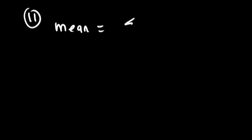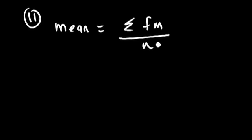Question 11 wants us to determine the mean speed given a frequency table where our data is organized in bins. To compute a mean from a frequency table, we need to sum the frequency times the midpoint, divided by the sample size, where the sample size is the sum of the frequencies.